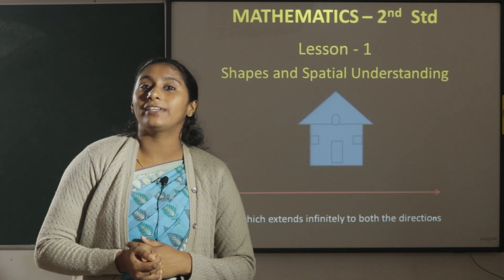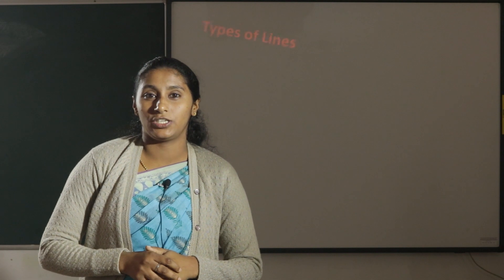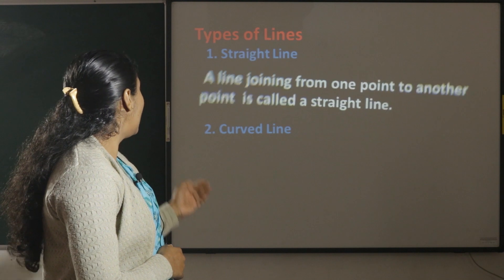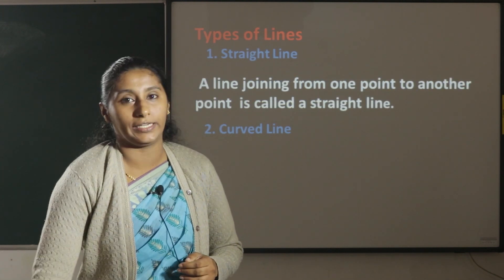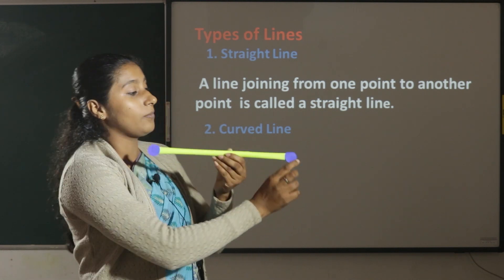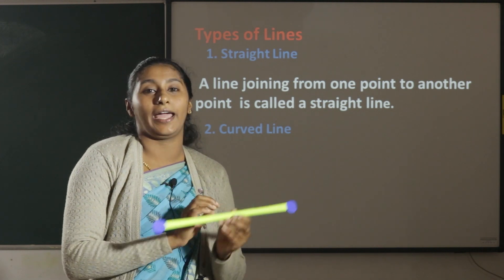There are two types of lines. Straight line and curved line. A line joining from one point to another point is called straight line.